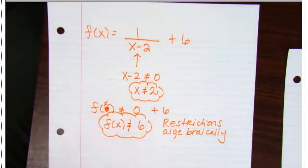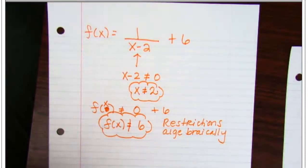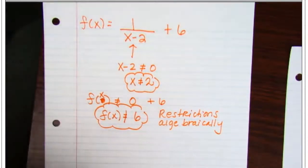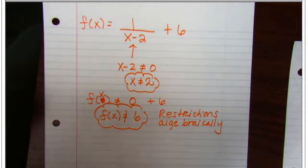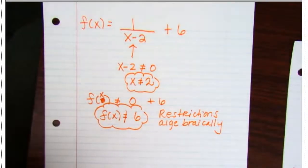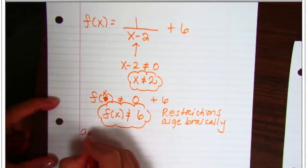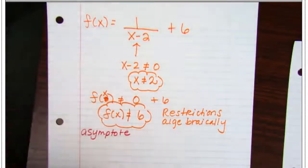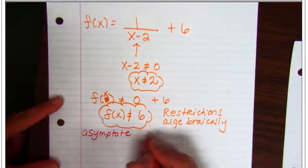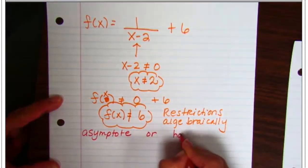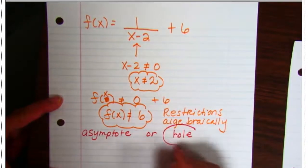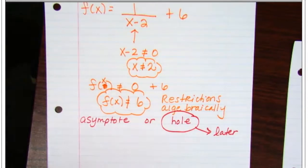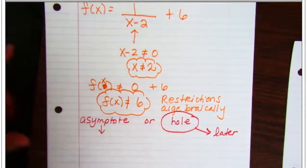What we have not talked about is how to show these restrictions on a graph. And on a graph, these restrictions can be two separate things. First of all, they can be an asymptote. Or they can be an actual hole, a jump in the graph. This, save that for later. We're talking about that, but we're not talking about that soon. We are totally talking about asymptotes.